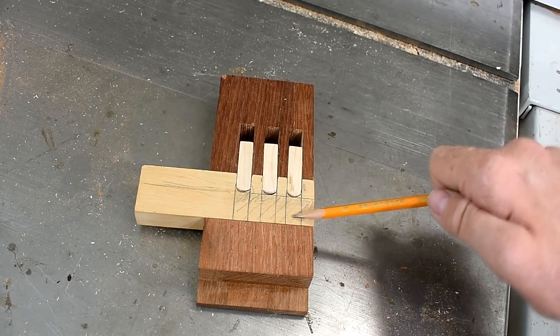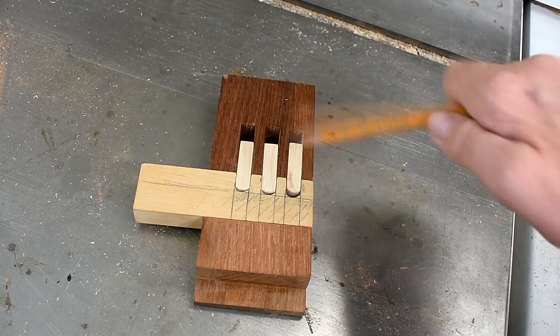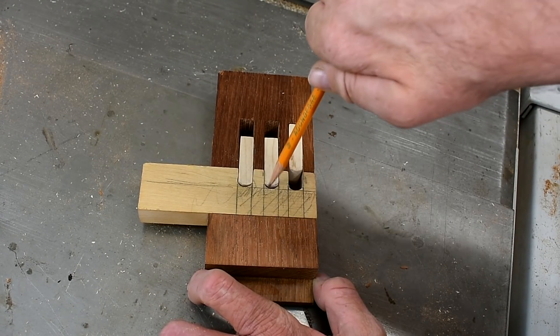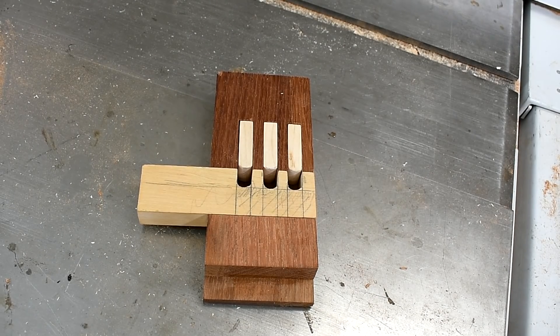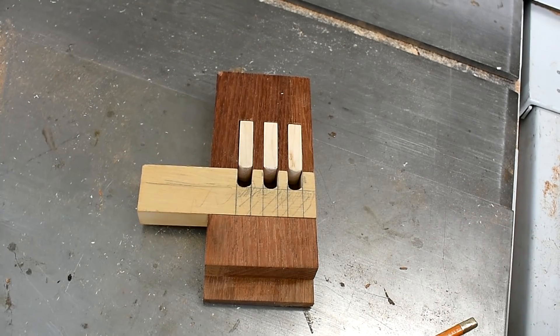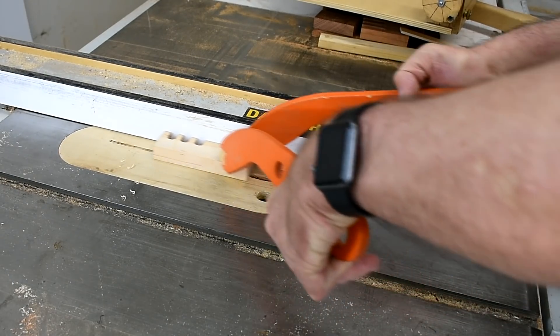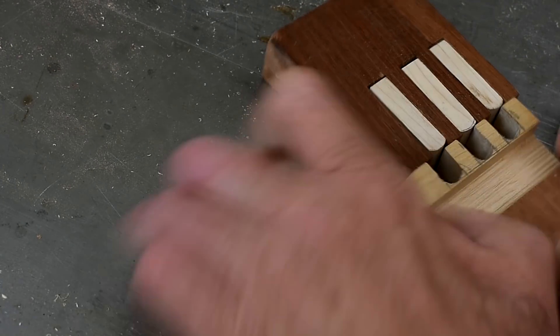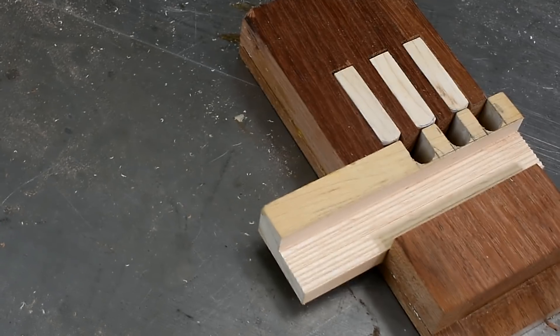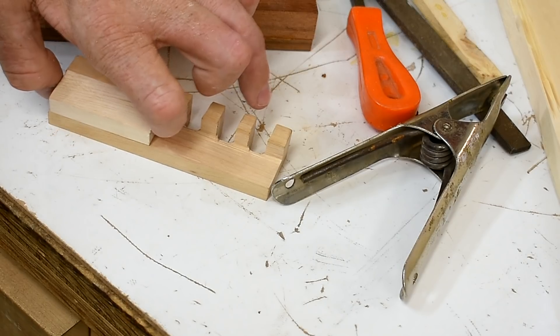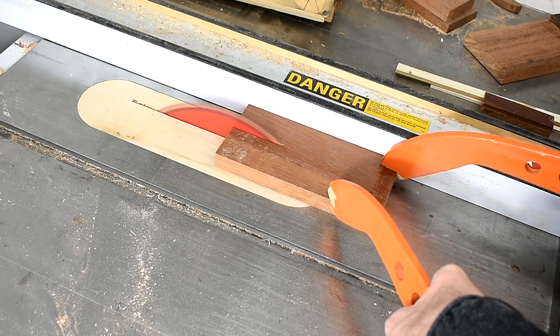Now for the latch bolt, I have to cut away this section here—that'll be for the key. I will just do that on the table saw. It's easier with a dado stack, but I'll just make do with one blade and move the fence over slowly till I get the right cut. So now I can start making the key.